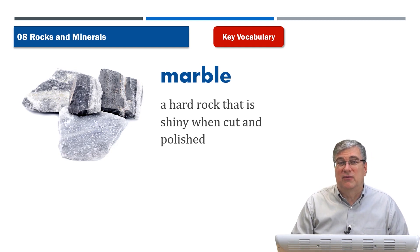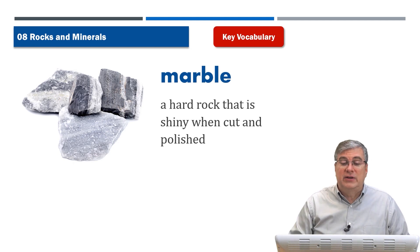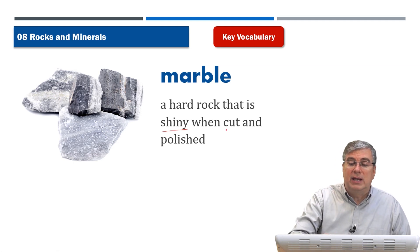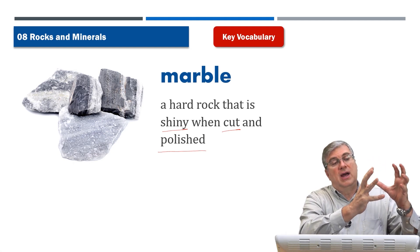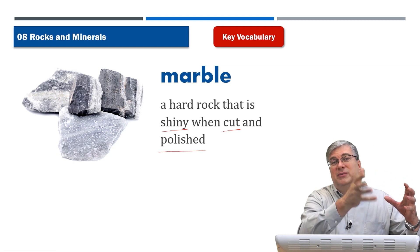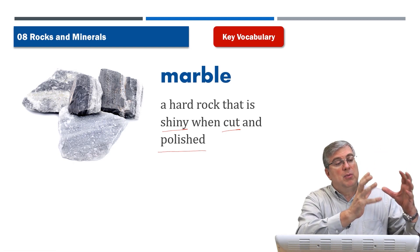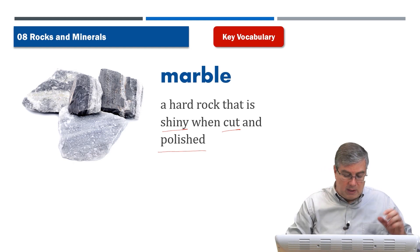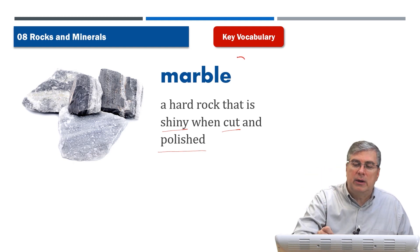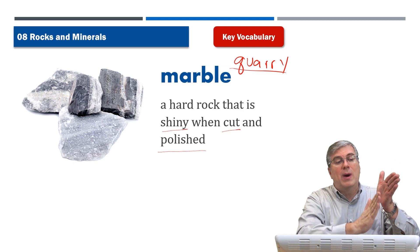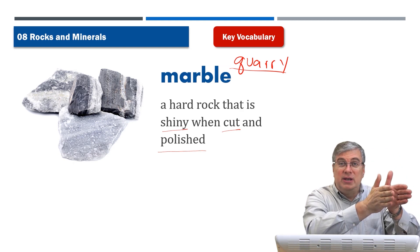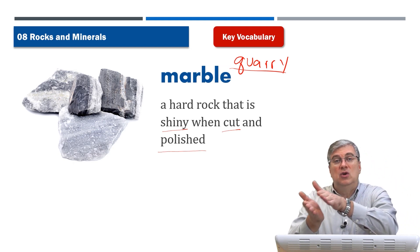Next we have marble. Marble is also a very strong type of rock, but it can also be a very beautiful one. It's a hard rock that is shiny when cut and polished. People find marble underground or exposed by weather, and they extract it from a quarry — like a mine — cutting it into square or rectangular slabs.